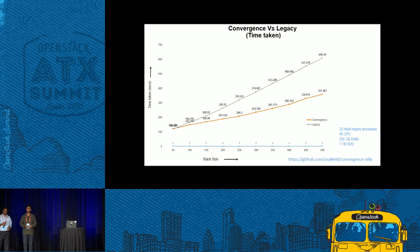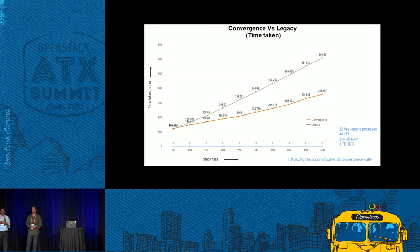I would say memory footprint marginally went up, but we're still in the process of getting these tests done. Probably we should be able to share this data in the following weeks when convergence is actually getting enabled by default.